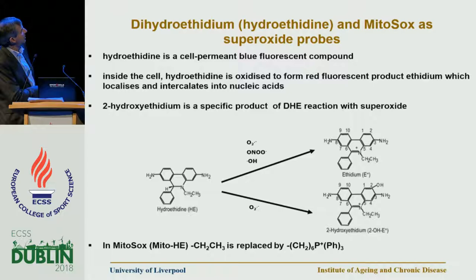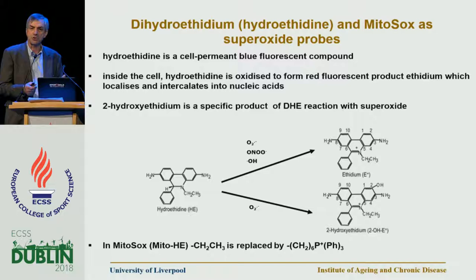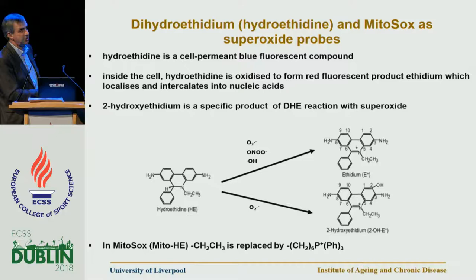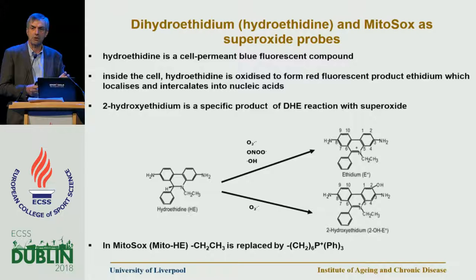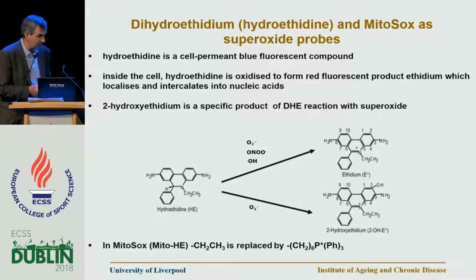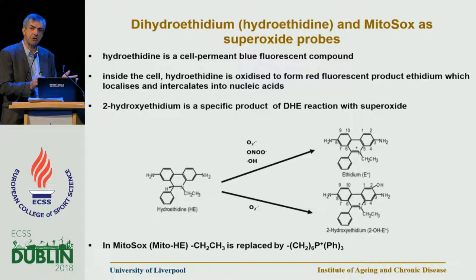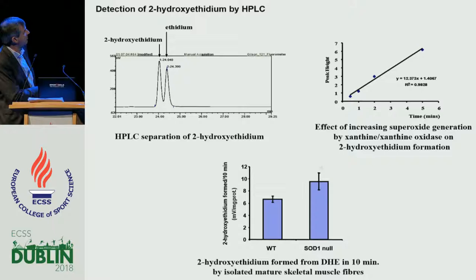I'll show you some work we did about five years ago using DHE — dihydroethidium — and a derivative called MitoSOX, which is modified such that the DHE will localize to the mitochondria. This is a probe for superoxide. We took this probe, localizing either within the muscle cell or only to the mitochondria, and compared what happens when we stimulate contraction in those fibers. It's a complex probe to use. The specific product you need to measure is hydroxyethidium, which you can do using an HPLC-based technique.